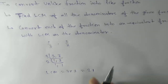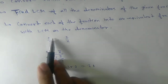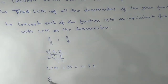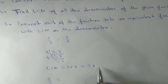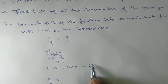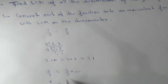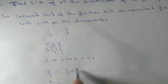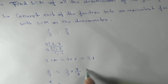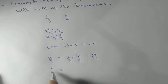Now, we need to convert 2/3 and 5/7 into equivalent fractions with denominator 21. For 2/3: what number multiplied by 3 gives 21? That's 7. So we multiply both numerator and denominator by 7, giving us 14/21.